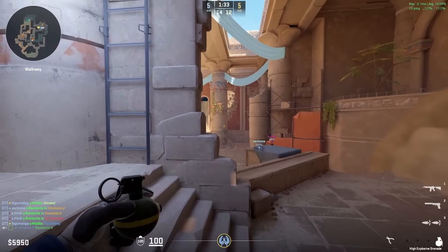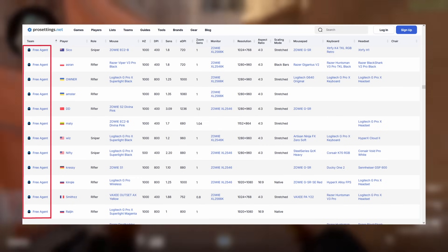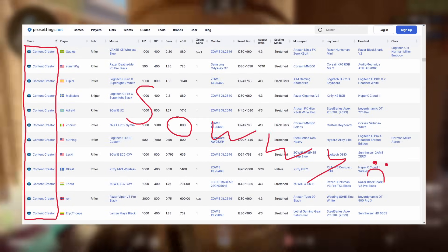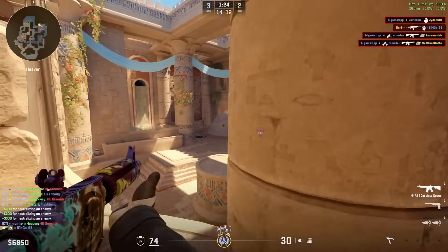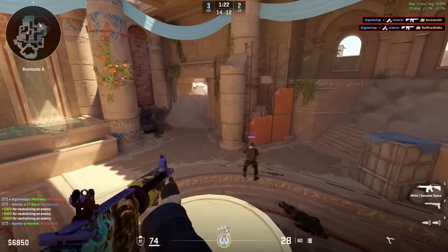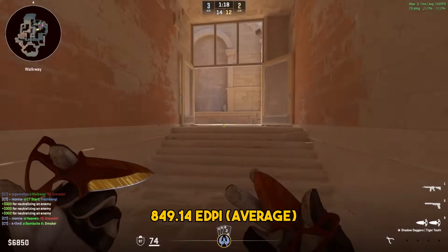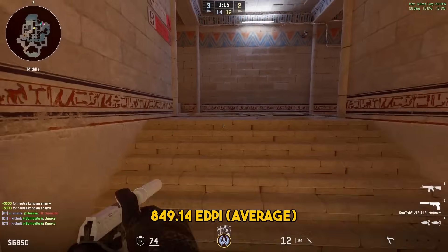You see, for one, the dataset also features current free agents and content creators, which, and I'm sorry to put it that way, were simply of no interest to me. While removing the respective entries already ended up slightly lowering the average effective DPI to 849.14, the results still weren't what I was looking for.